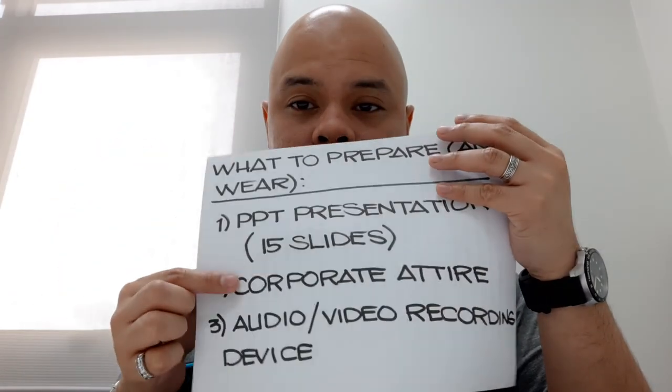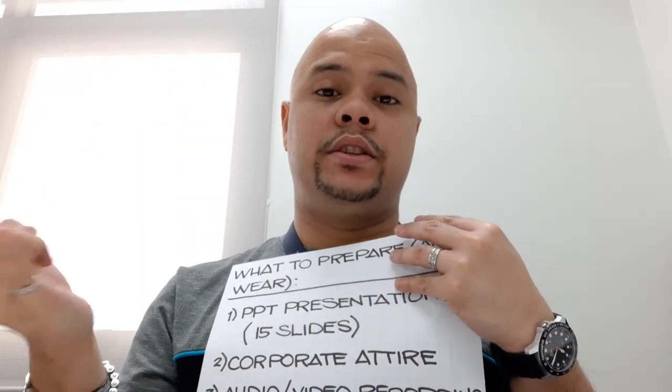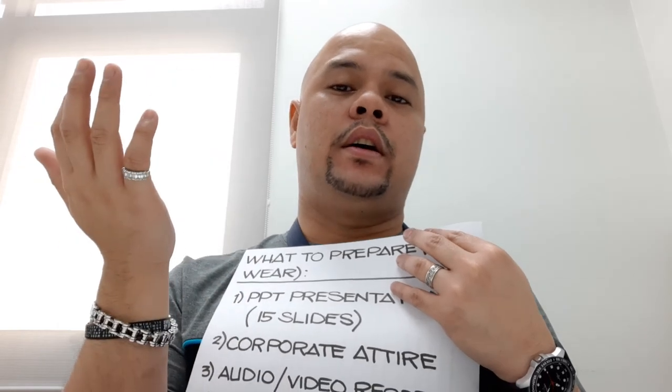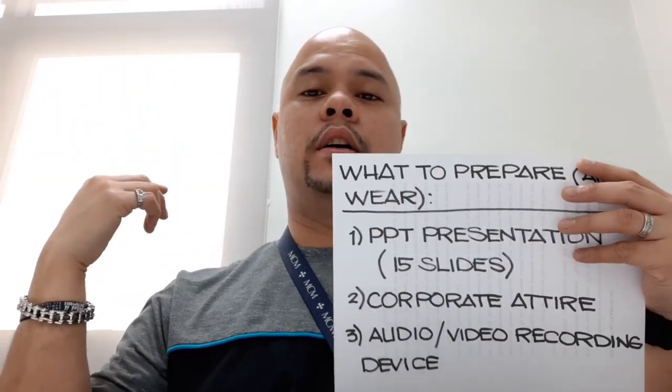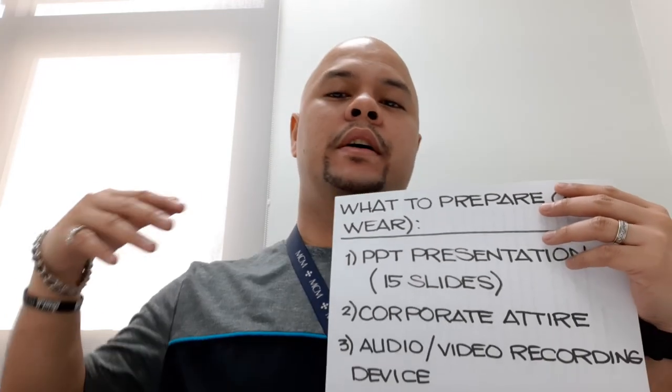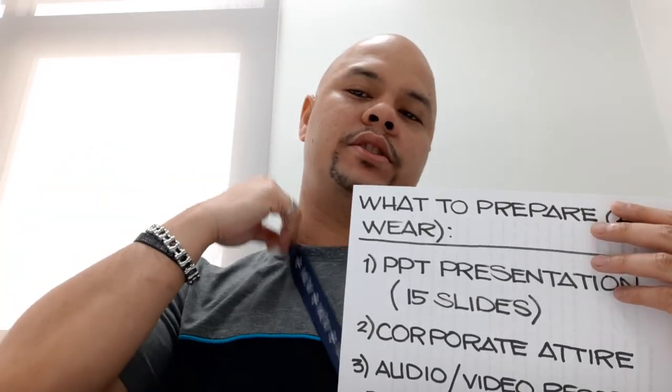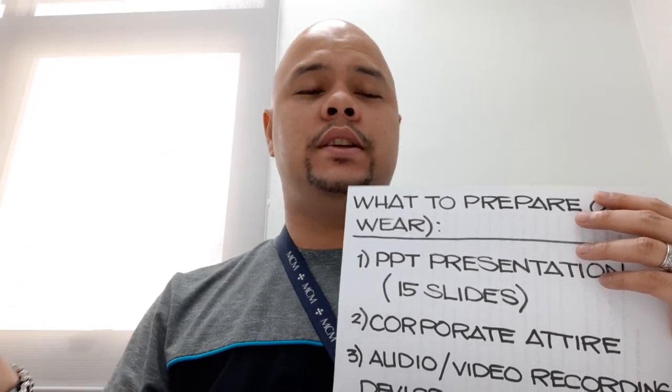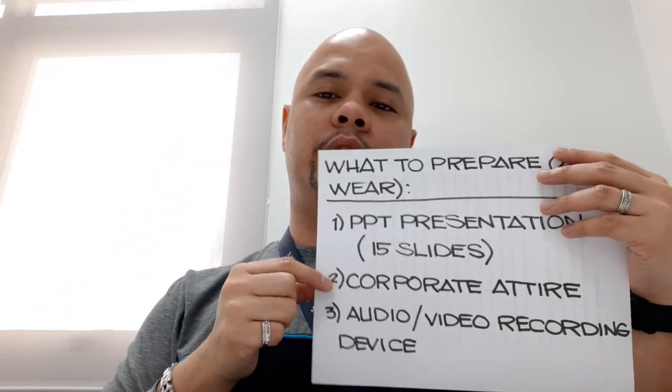Next, please wear corporate attire — no jeans, no tattered jeans, no leggings, no spaghetti straps, no round neck shirts, no rubber shoes. It's black or brown leather shoes, slacks, a collared shirt, a suit for some, a blazer for the ladies — but make sure that it's corporate attire. And last but definitely not the least, it might also be helpful if you could prepare an audio or a video recording device so that you can play back the comments of your panel members just in case you forget some of them. Thank you very much for your time. This is Sir Daryl. Class dismissed.